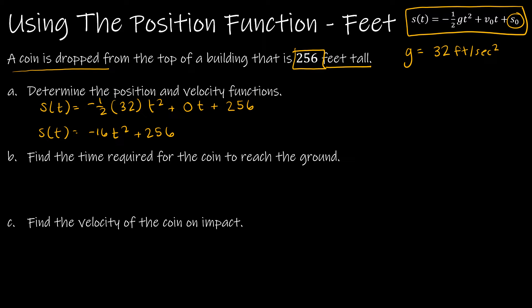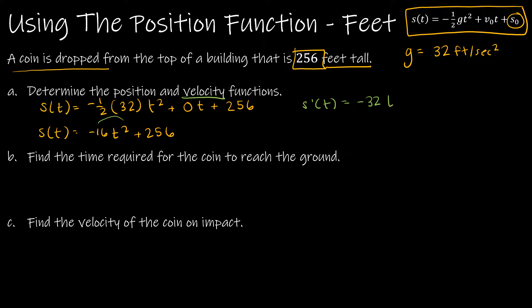You may be tempted to factor this as negative 16 times the quantity t squared minus 16, but it's not super helpful since we also need to find the velocity function. When finding the velocity function we're taking the derivative, so it's easier without the parentheses. Using the power rule, s prime of t gives us negative 16 times 2, so negative 32t to the first, and the derivative of 256 is zero. So the velocity function is negative 32t.